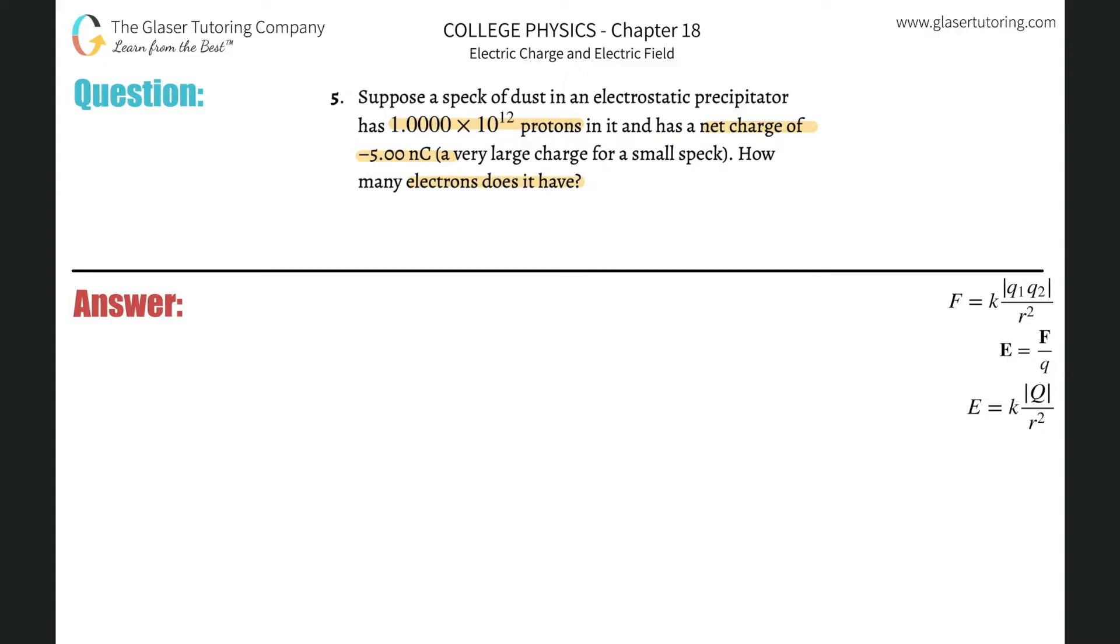All right, so when anything has a net charge, in this case it's going to be negative 5.00 nanocoulombs. Whenever something has a net charge, this net charge tells us the charge in excess of either electrons or protons. It tells us the excess charge of the electrons.